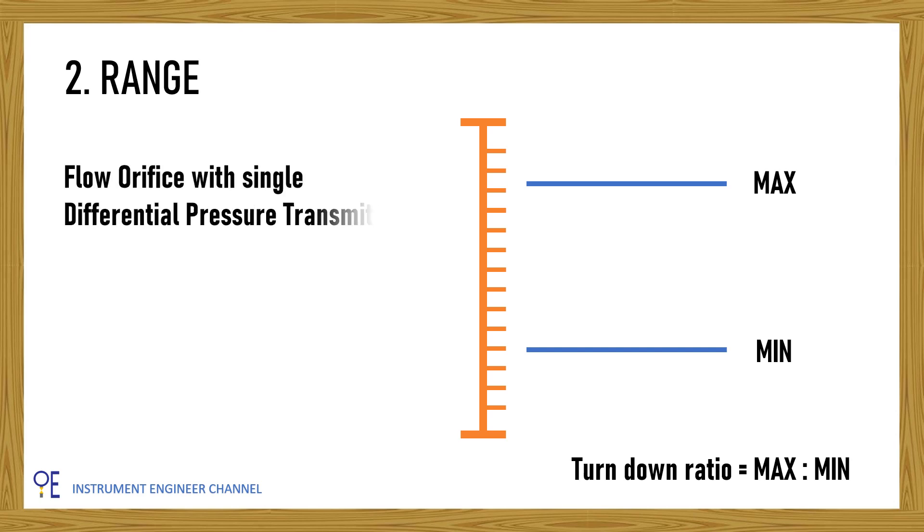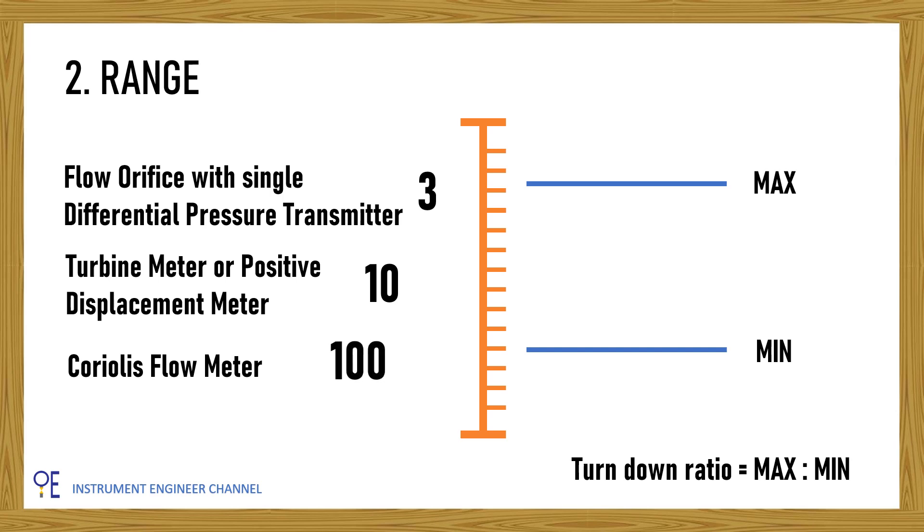Flow orifice with single differential pressure transmitter can only have turndown ratio 3. Common turbine meter or positive displacement meter have turndown ratio 10, while Coriolis can have turndown ratio up to 100 and ultrasonic flow meter even higher.